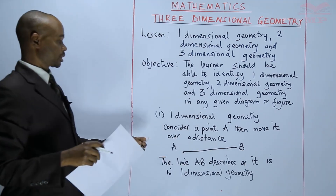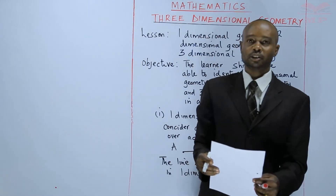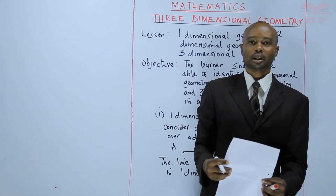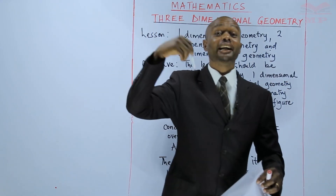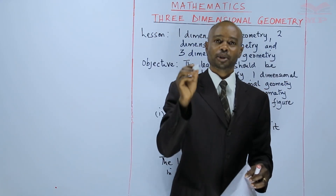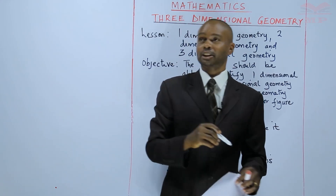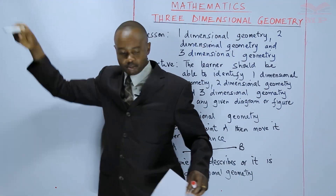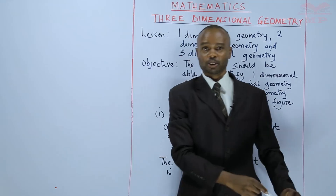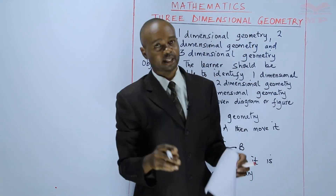So a line is a typical example of one-dimensional geometry. When you consider a line, do not only think of a line — it could be a wire. Like if I stretch a wire from that point up to the floor, that is one-dimensional geometry. Think of our real life situation.